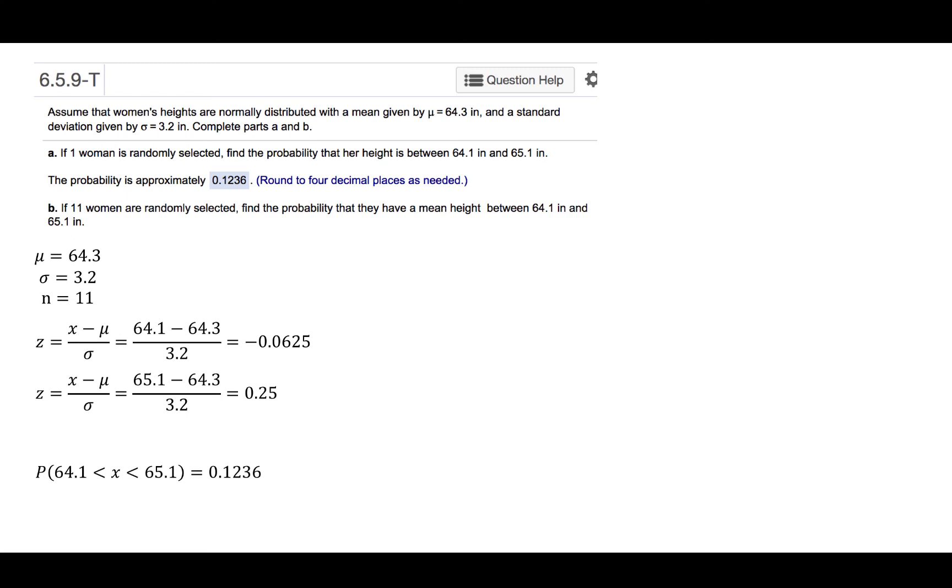When we calculate z-scores associated with a sample mean, we have to make sure that we use the correct standard deviation. In the denominator, the standard deviation will be the standard deviation for the sampling distribution, or in other words, the standard error of the means. We find that by dividing the standard deviation of the population by the square root of the sample size.